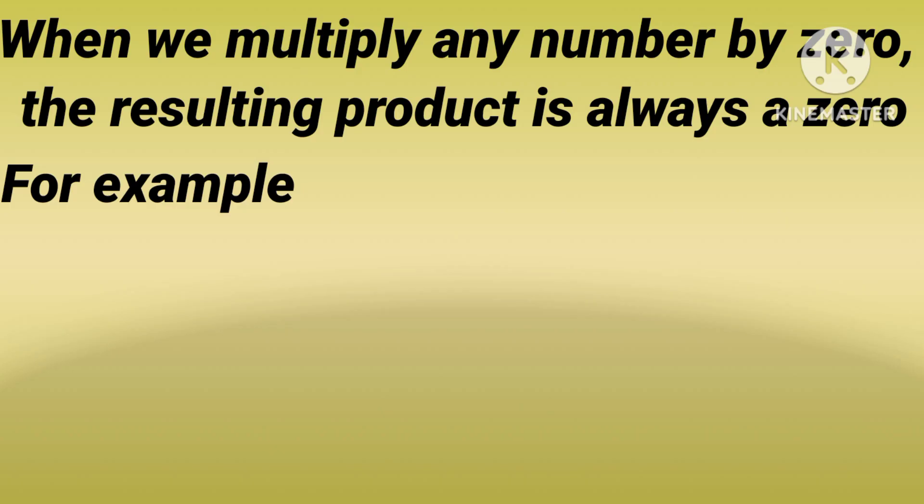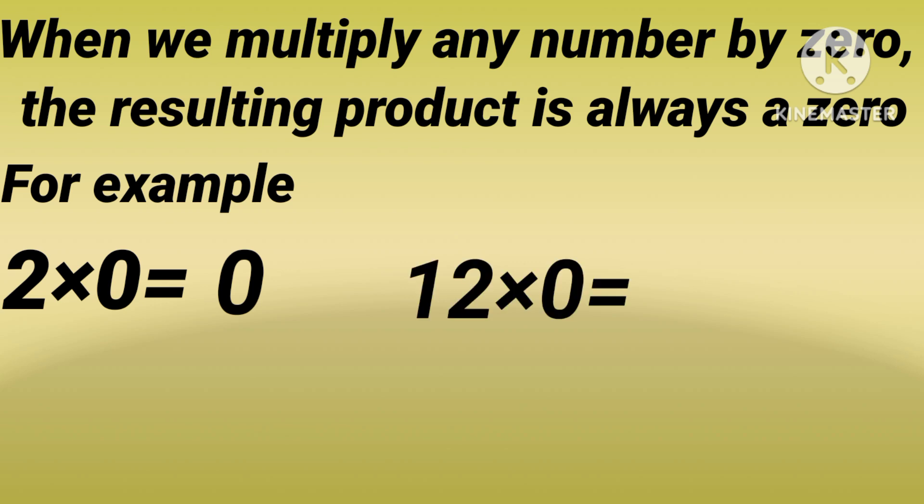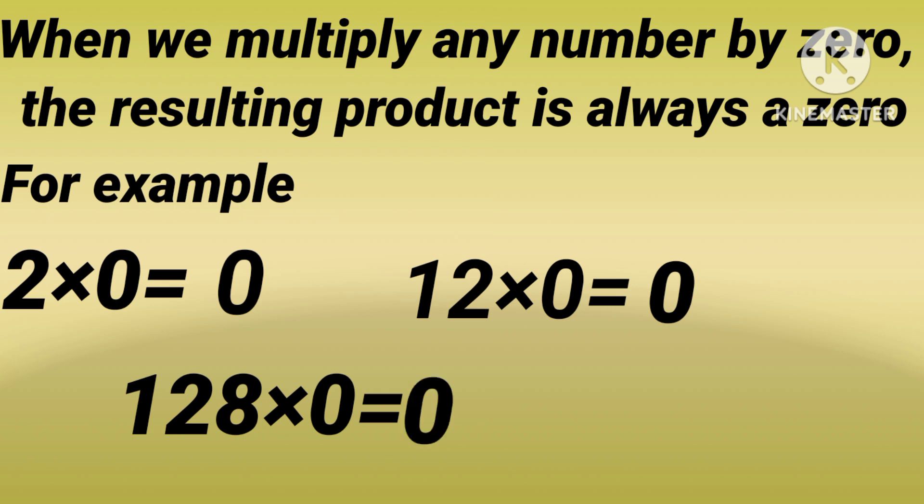When we multiply any number by 0, the resulting product is always a 0. For example, 2 multiply by 0, the answer is 0. 12 multiply by 0, the answer is 0. 128 multiply by 0, the answer is 0.